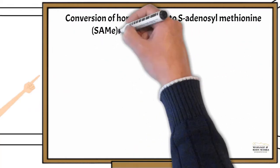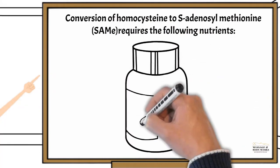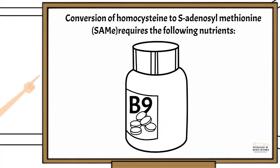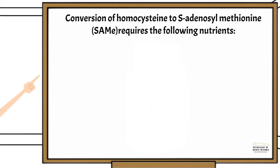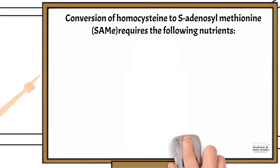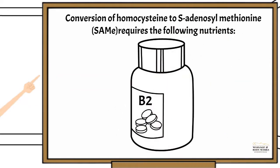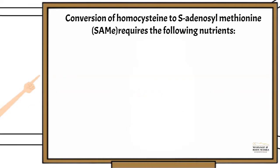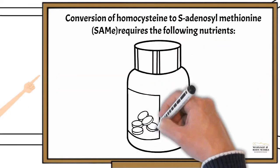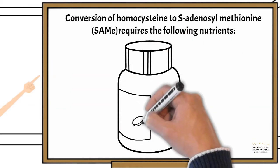Conversion of homocysteine to SAME requires the following nutrients: Number 1, Vitamin B9; Number 2, Vitamin B12; Number 3, Vitamin B2; Number 4, zinc; Number 5, magnesium.